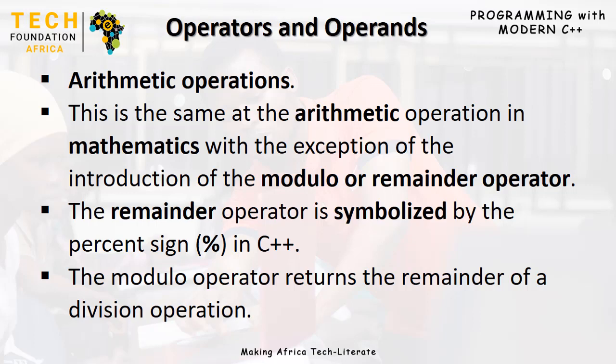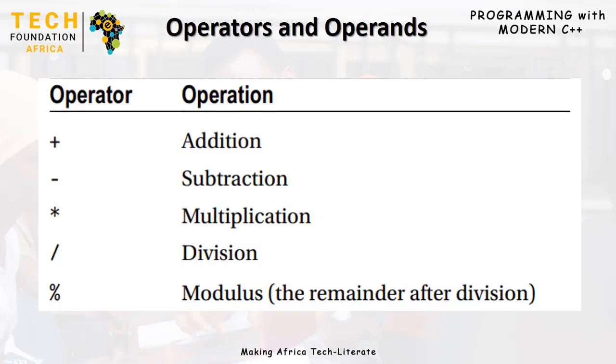Arithmetic is the study of numbers, especially the properties of traditional operations such as addition, subtraction, multiplication, and division. The basic operations that can be carried out on integers are called arithmetic operations. These are the same as in mathematics, with the exception of an additional operator called the modulo or remainder operator. The remainder operator is symbolized by the percent sign in C++, and it retains the remainder of a division operation.